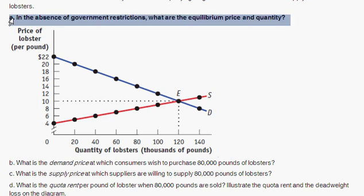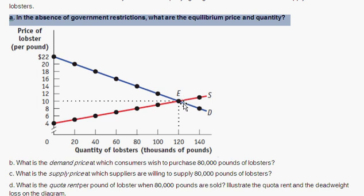Part A: in the absence of government restrictions, what is the equilibrium price and quantity? Equilibrium price and quantity is the point in a market where quantity supplied equals quantity demanded. That's going to be at point E, where the demand and supply curves intersect. Quantity demanded is going to be 120,000 pounds of lobster, and quantity supplied is the same, 120,000 pounds of lobster. The equilibrium price is $10 per pound.